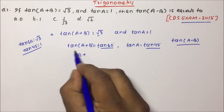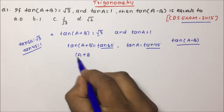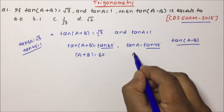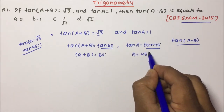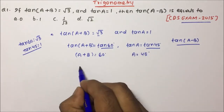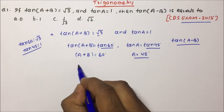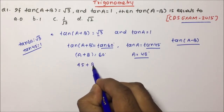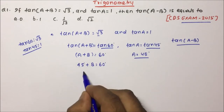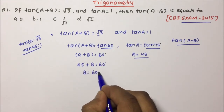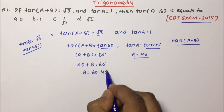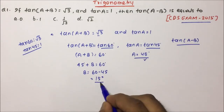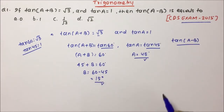Since both sides have tan, we can write A+B = 60° and A = 45°. So substituting, 45° + B = 60°, which gives B = 60° − 45° = 15°. Now we have the values of both A and B.